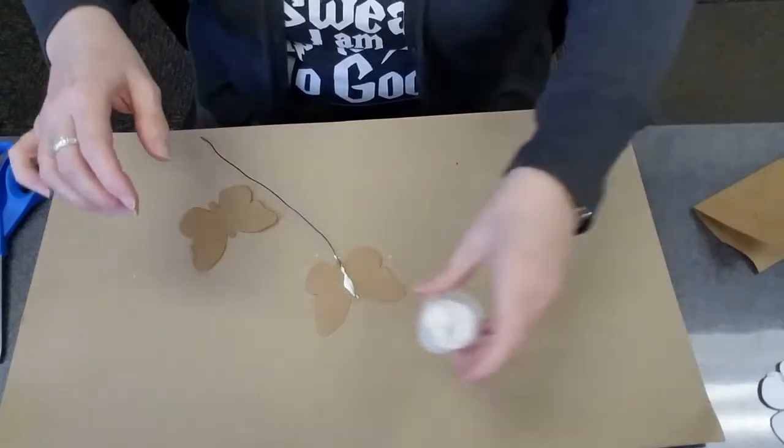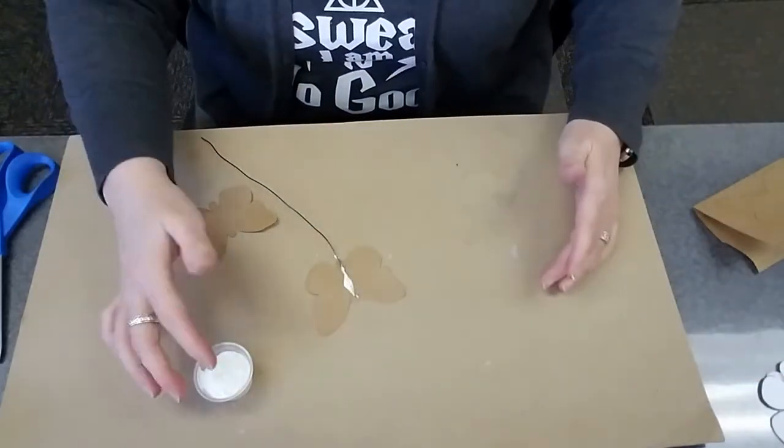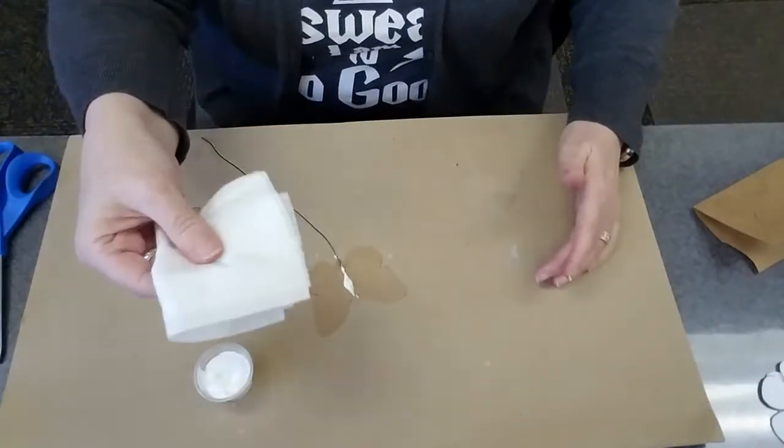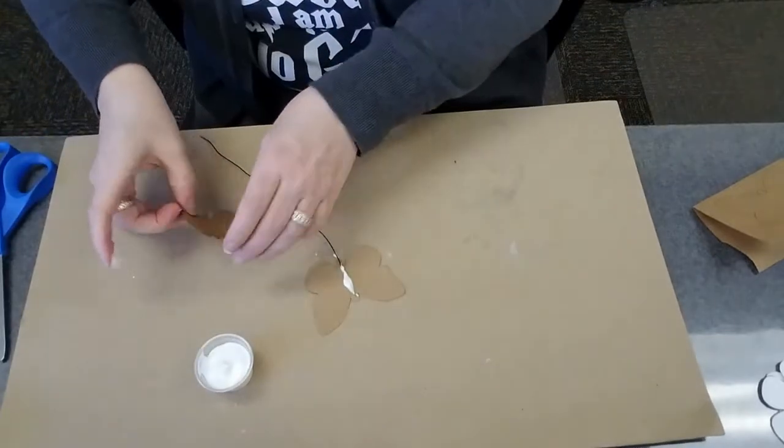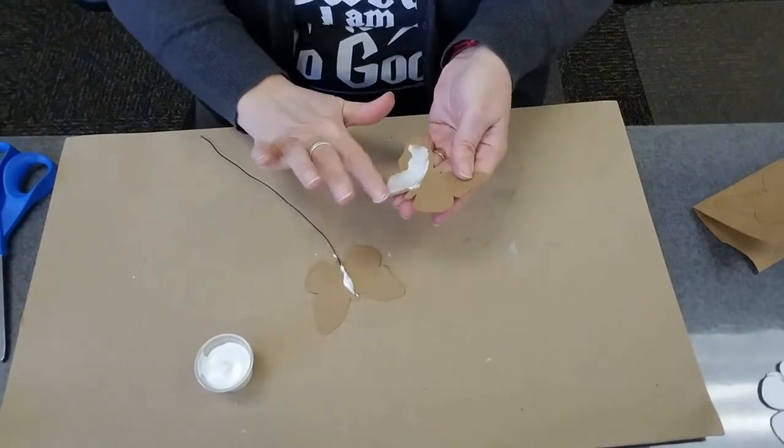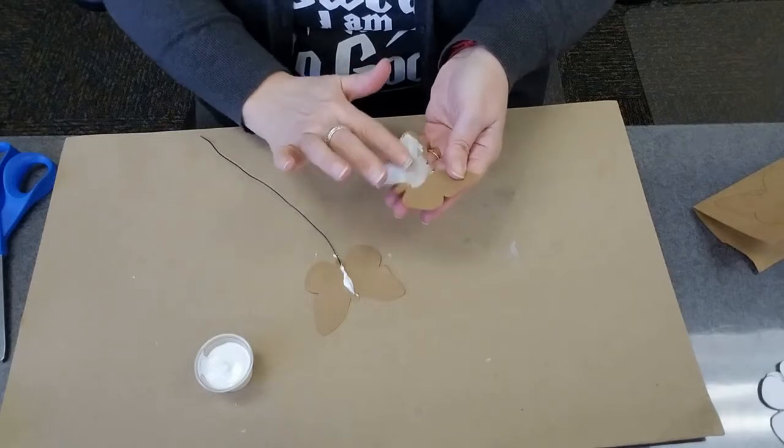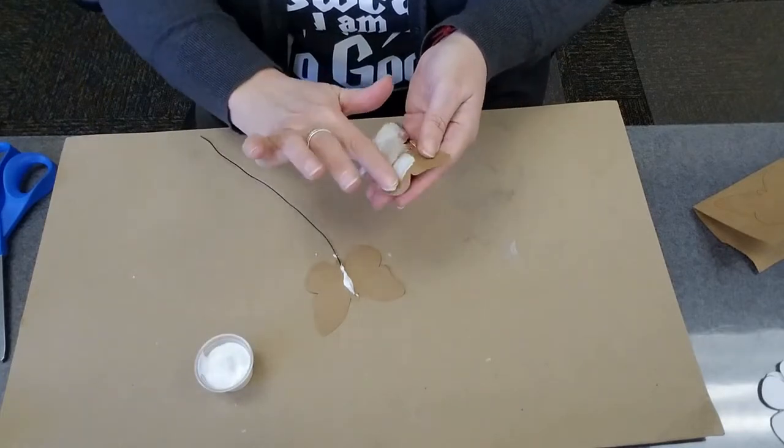And then the next step is you're going to take, I just use my finger, and I have a wet towel ready just to wipe everything off. You're going to take your finger, and then you're just going to spread glue all over on the inside, so that when you glue these two pieces together.